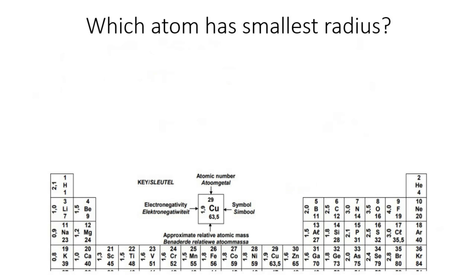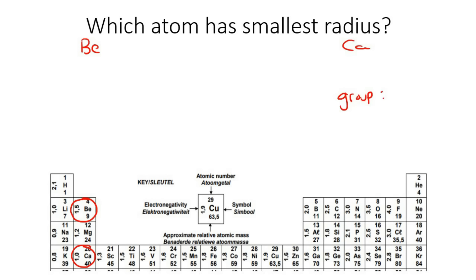Let's do another example. I want us to compare beryllium and calcium. Beryllium is over here and calcium is over here. Are they in the same group or the same period? They are in the same group. So are we going to look at their protons or the number of energy levels? Well done if you said the number of energy levels — we're not going to look at protons here.